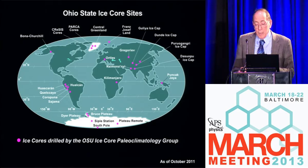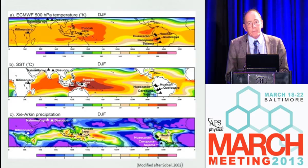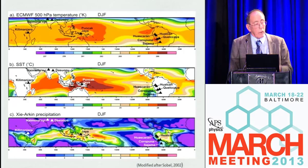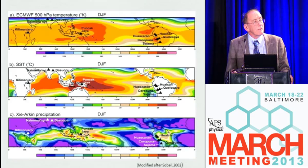So we have drilled around the world, and these are the places that we've recovered records. The tropics are a very important part of our planet — over 50% of the surface area lies between 30 degrees north and 30 degrees south. The central panel here shows sea surface temperatures, and you can see that sea surface temperatures drive precipitation in this part of the world. But if you get up to the 500 millibar level where the glaciers are, temperatures are very uniform in the tropics and they're all behaving in the same way.